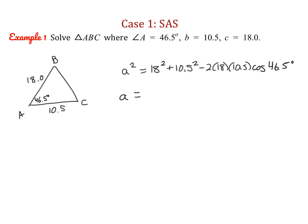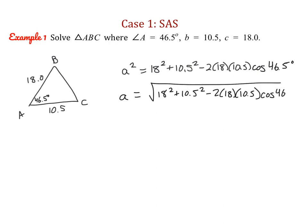Take the square root of both sides, and plug this entire expression into the calculator at once. Doing it all in one shot really reduces the margin of error. You should get that side A is approximately 13.2, rounded to the nearest tenth.